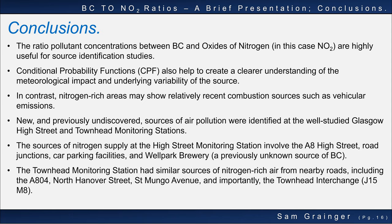So this brings me to the conclusions. The paper suggests that the ratio of pollutant concentrations between BC and oxides of nitrogen — in this case NO2 — are highly useful for source identification studies. Conditional probability functions (CPF) also help create a clearer understanding of the meteorological impact and underlying variability of the source. Carslaw's papers from 2006 to 2019 focus on the ratio of PM to oxides of nitrogen. The BC plot is perhaps even more useful, as high BC environments are likely to show combustion-related emissions, both historically as resuspended hotspots and from soot-rich contemporary sources.